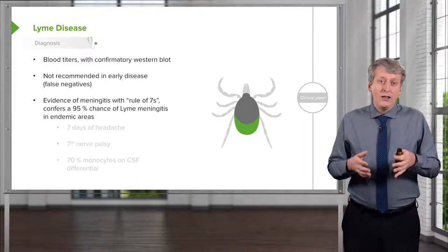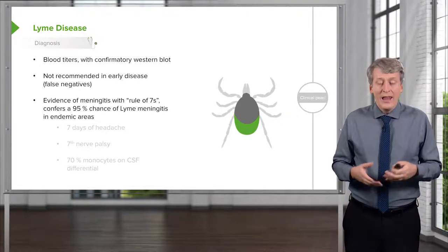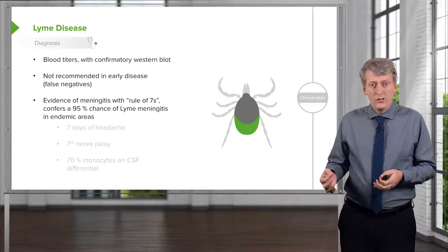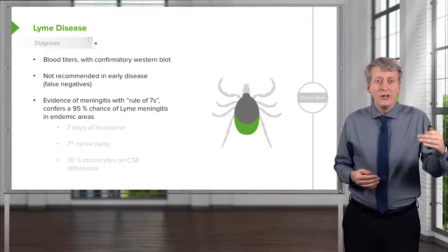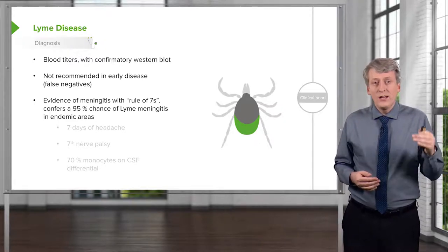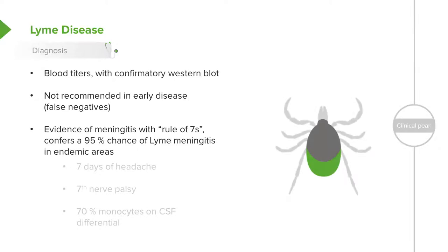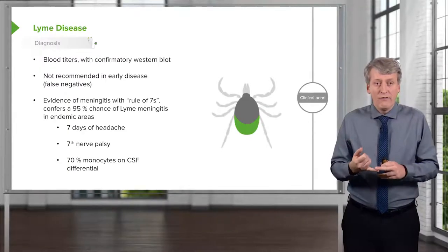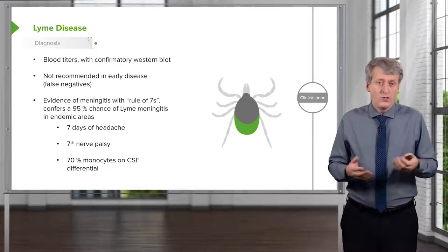We can count on patients having Lyme meningitis if they satisfy the rule of sevens. If a patient has suspected Lyme disease with signs or symptoms of meningitis, we may do a spinal tap. Using those CSF numbers and the patient's history, if they satisfy the rule of sevens, this confers a 95% chance of Lyme meningitis in endemic areas. The rule of sevens: the patient should have seven days of headache, a seventh cranial nerve palsy, or more than 70% monocytes on the CSF white blood cell count. If a patient satisfies any one of these criteria, you can presume Lyme meningitis and treat accordingly while awaiting Lyme titers.